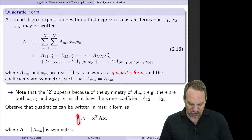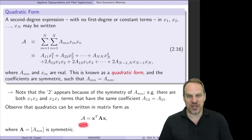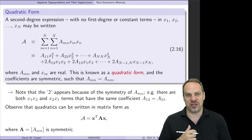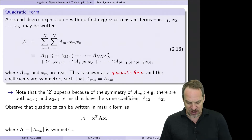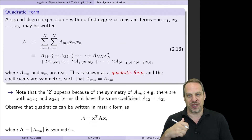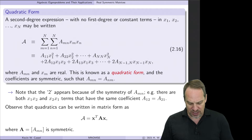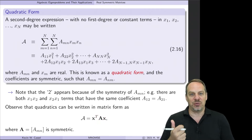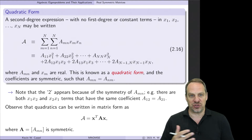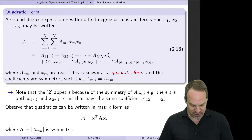Here's how we can write this in matrix form. The quadratic, script A, is just x-transpose times A times x. Here x is the vector of scalar variables x1 through xN, and A is an N by N matrix of the coefficients of each of the terms.